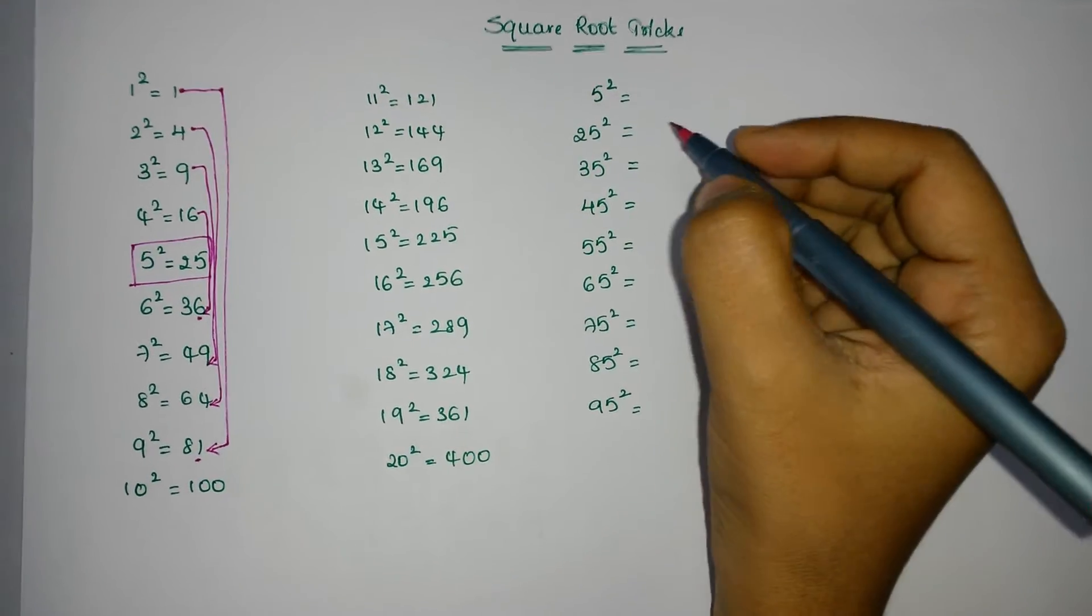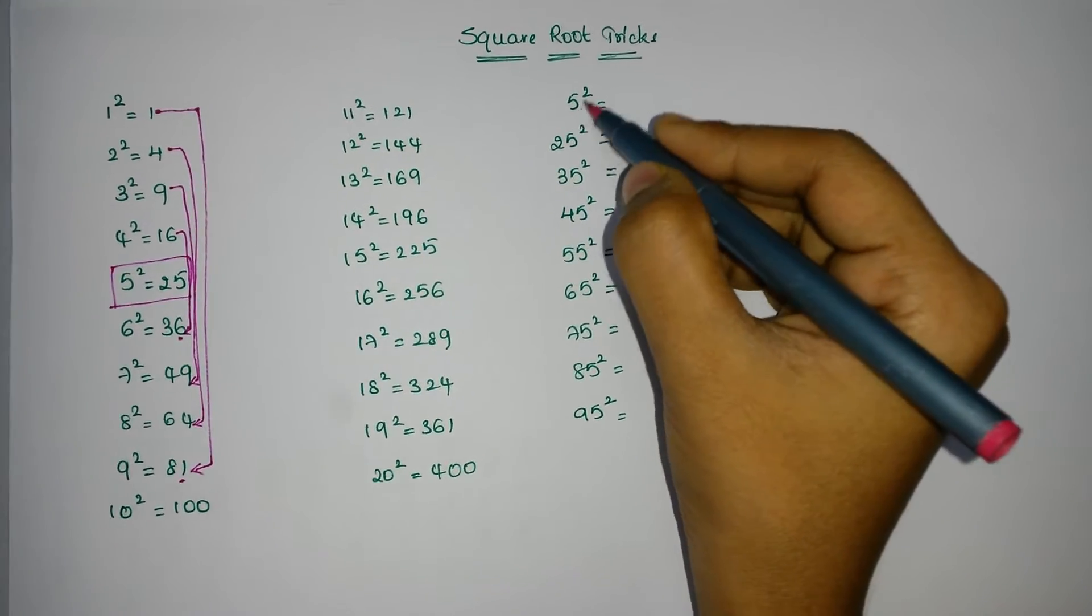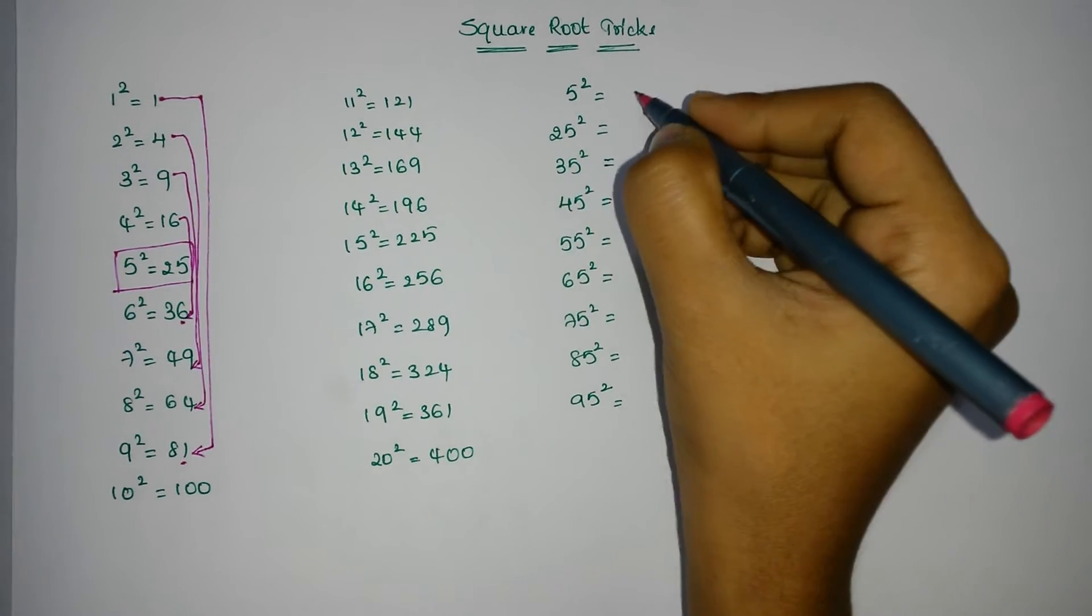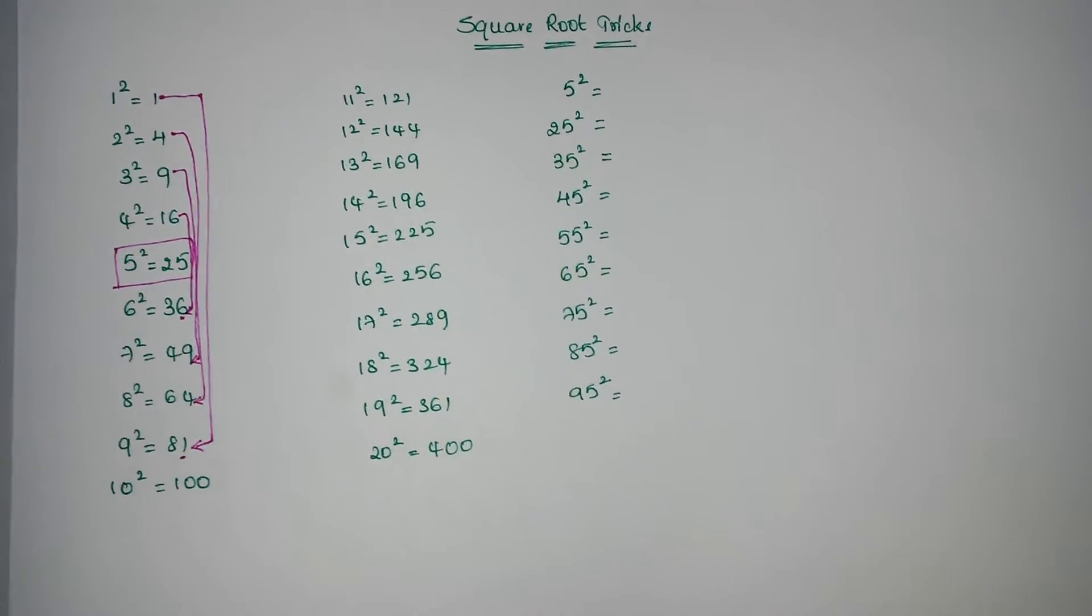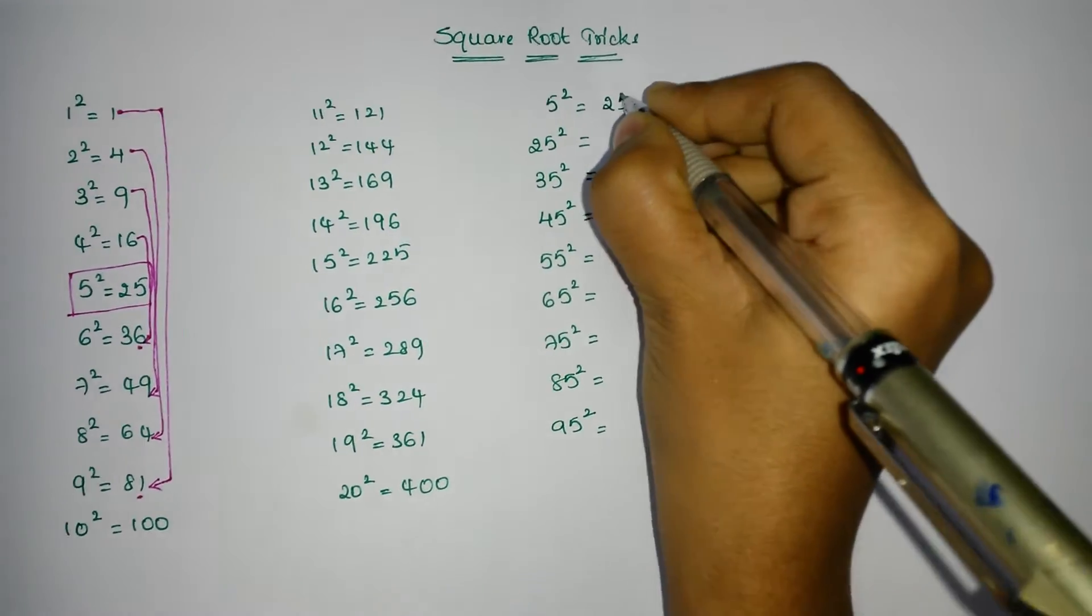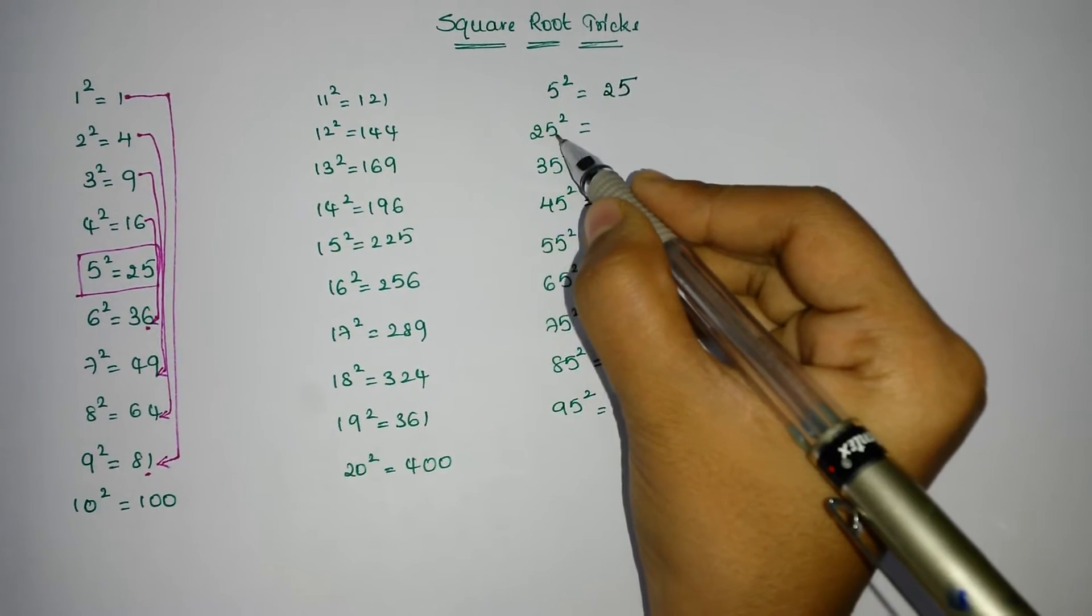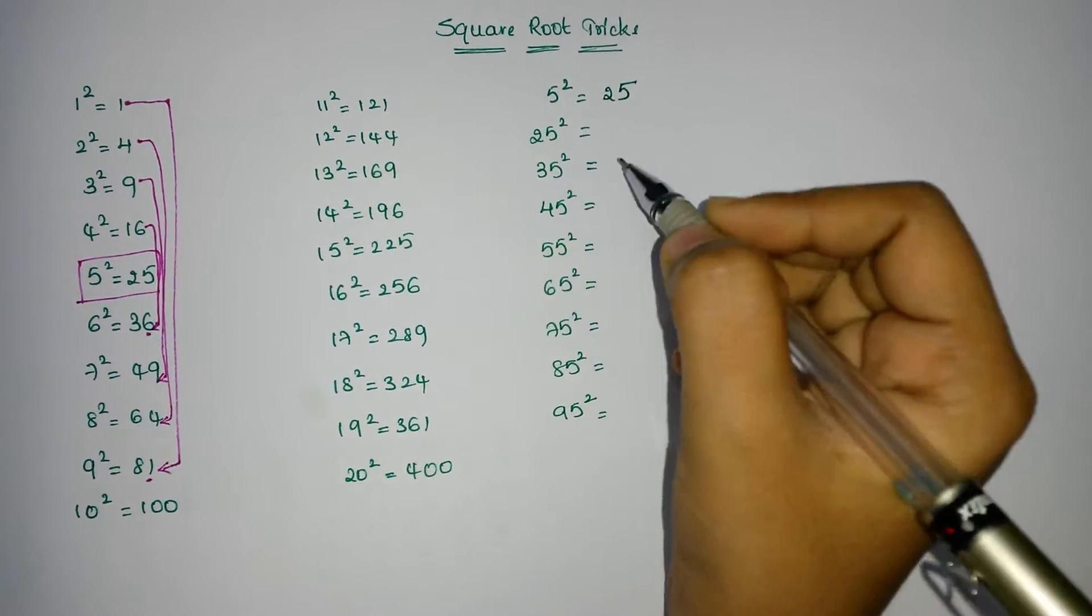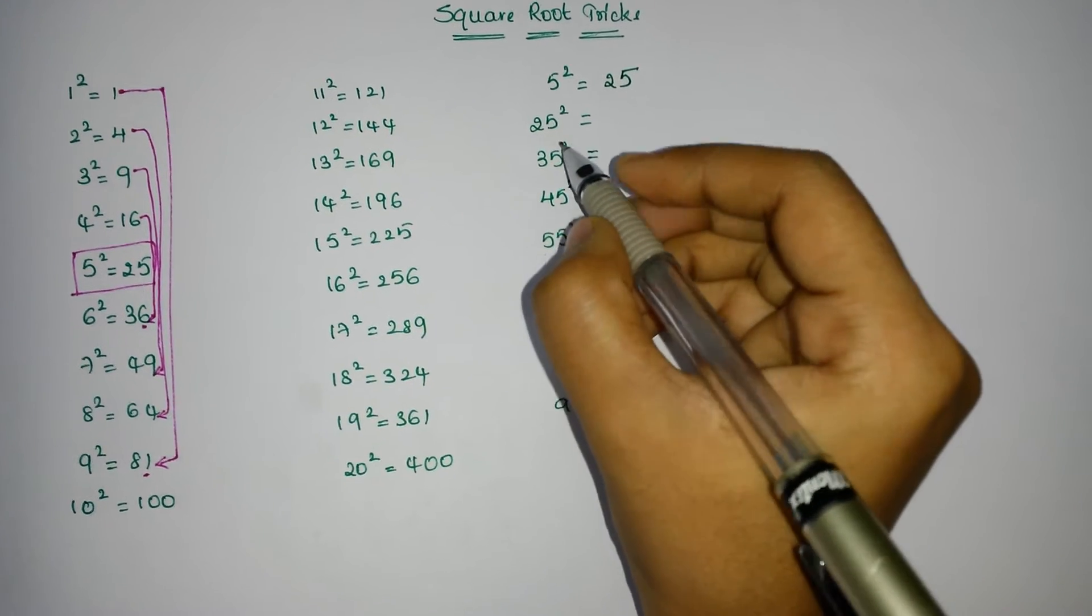Now we will explain one method for finding squares. See here, the square root of 5 square is, we all know, 25. Then to find 25 square, see: 2 is here, after 2 the number we get is 3.